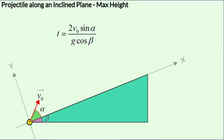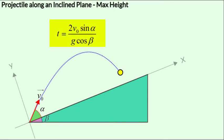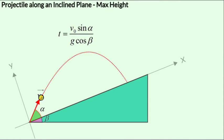From the previous lesson we gathered that the time taken by a projectile to reach its highest displacement position along the y-axis, perpendicular to the plane of the incline, is half the total time of flight. The total time of flight is 2V₀ sin α over G cos β, from launch to landing. Therefore, the time from the launch point to maximum height is V₀ sin α over G cos β.